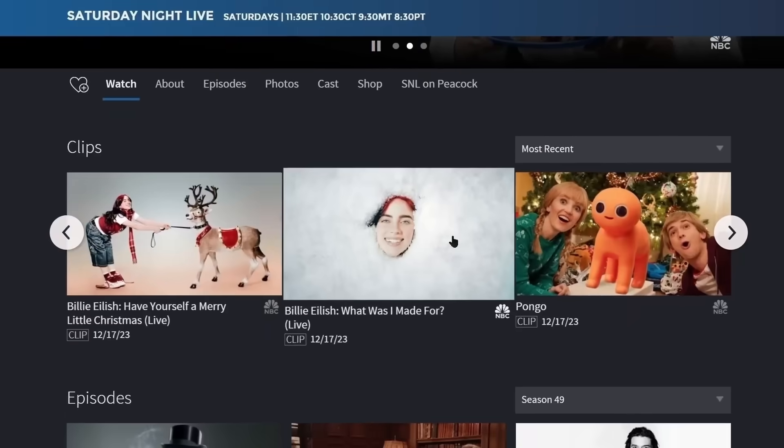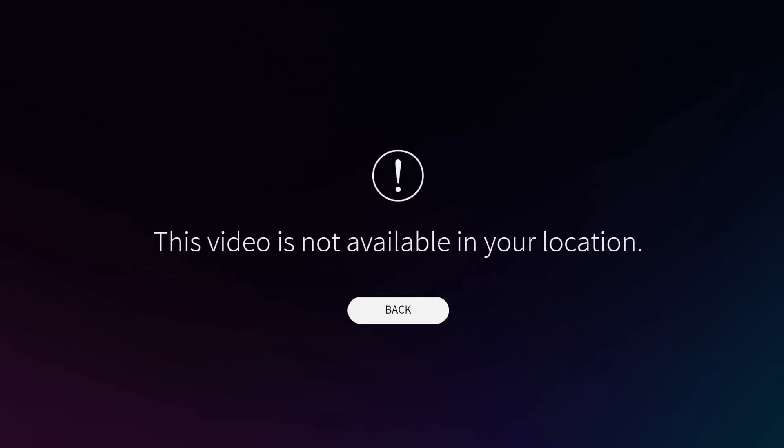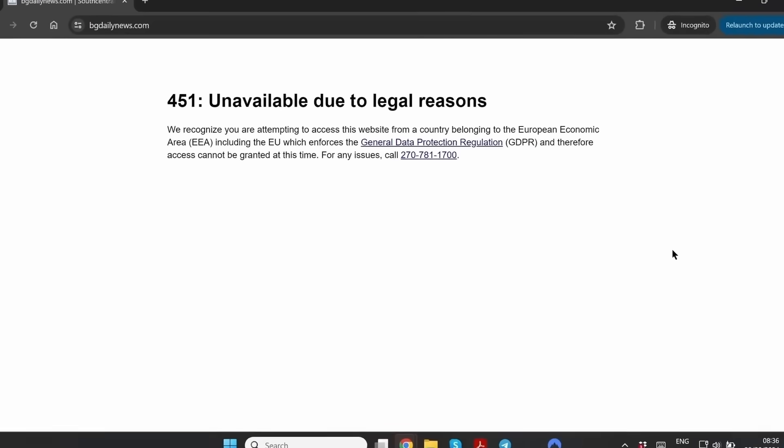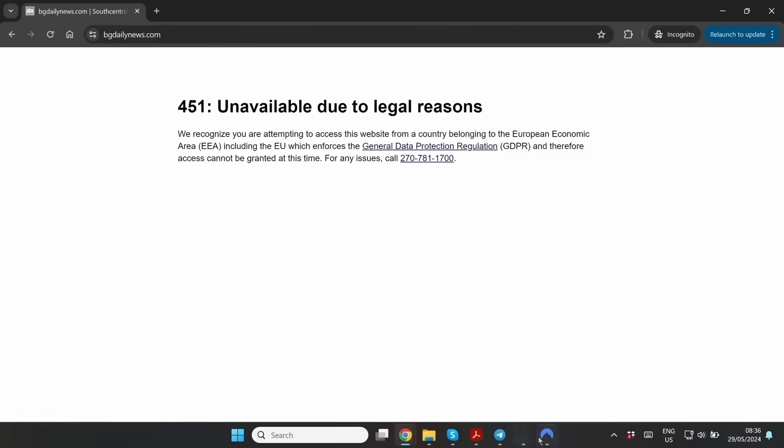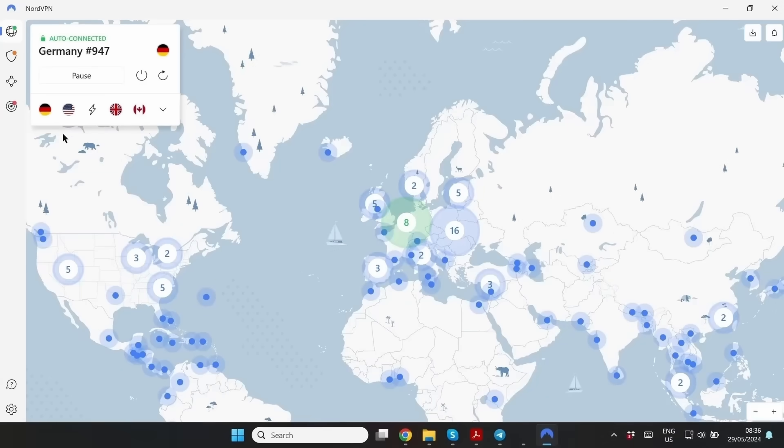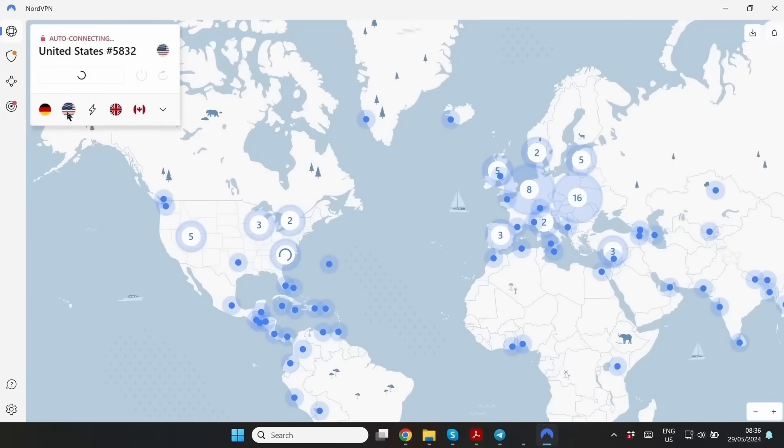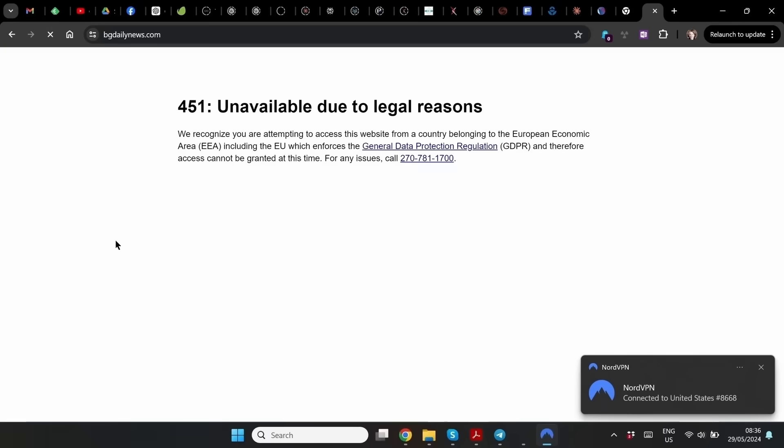You know how some content is blocked for users in certain locations? For example, if you're in Europe, a lot of pages in the United States have become inaccessible in recent years because they don't comply with European privacy regulations. That can get really annoying. But well, NordVPN has more than 5000 servers all over the world. Just pick a server in the United States. Problem solved.